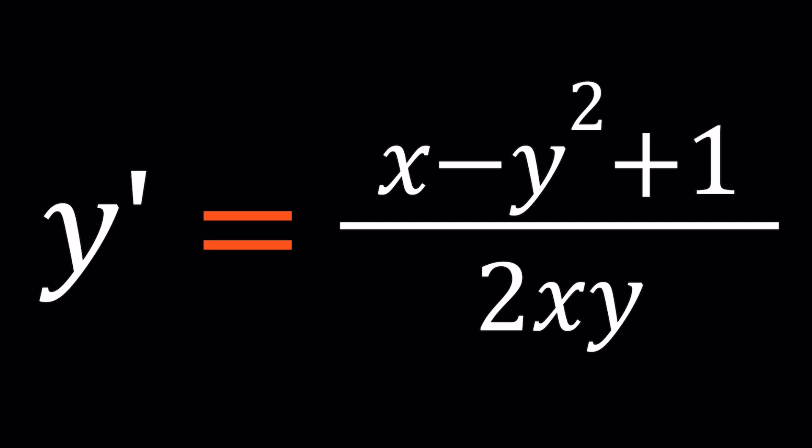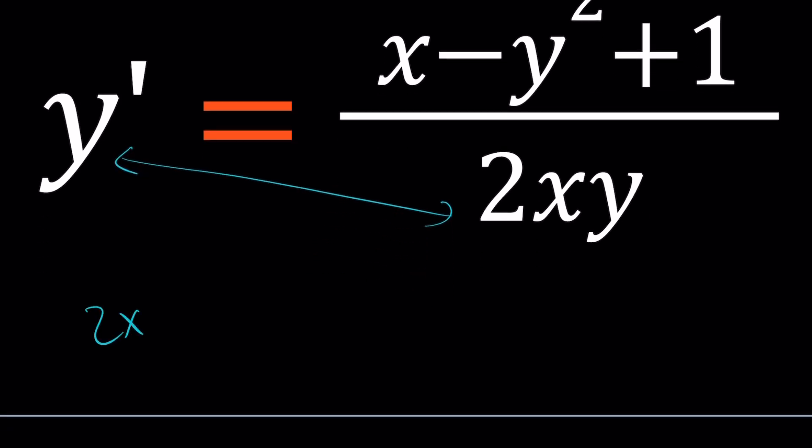But we're going to be using something straightforward to solve this problem. Obviously this method does not apply to all problems, but there might be other strategies that could turn these equations into a good form. Without further ado, let's cross multiply. We get 2xy y' = x - y² + 1.